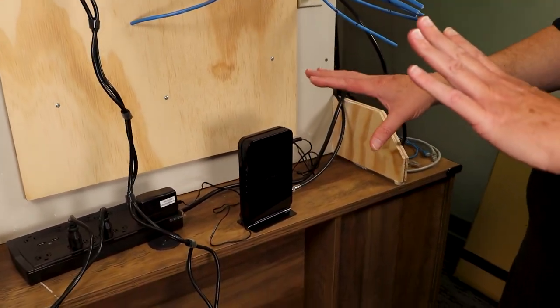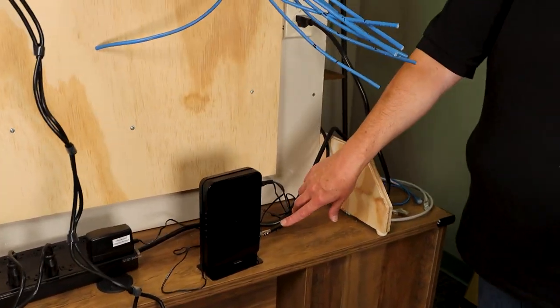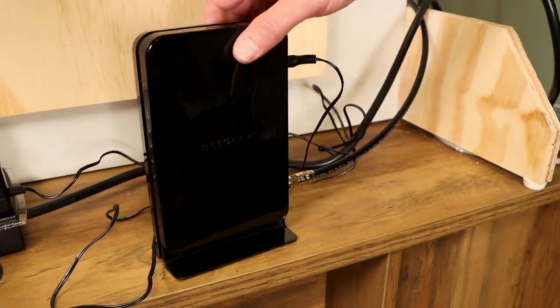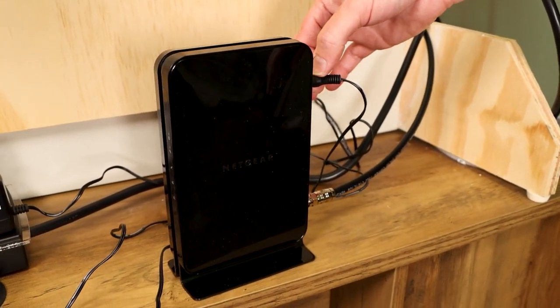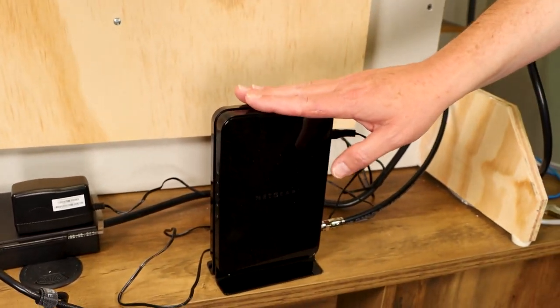All right, so let's talk about some of the connectivity. So back here, we've got coaxial cable. This is our RG6 quad shield going into a cable modem. And this cable modem, of course, is plugged into our surge protector. And so it all starts here.